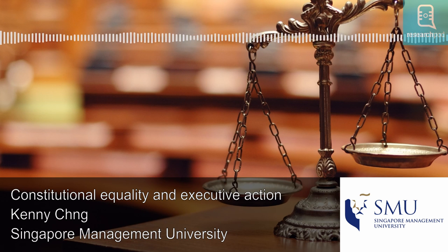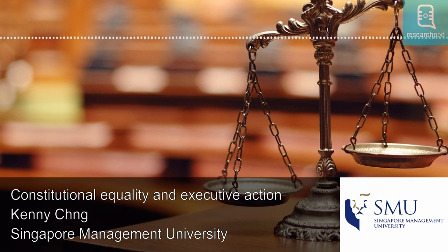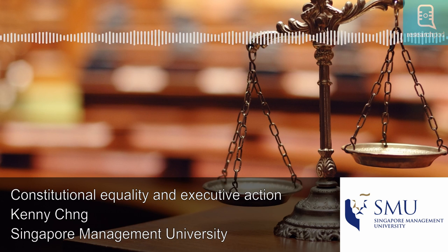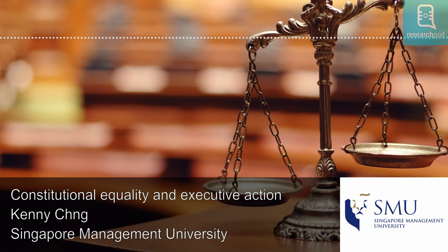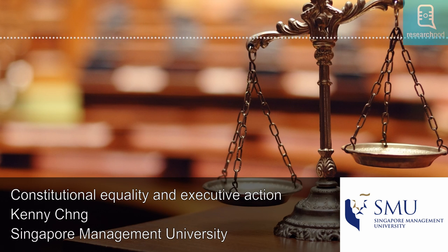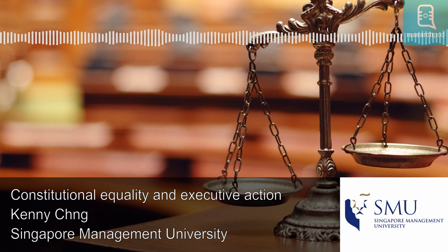For example, a land authority might impose a compulsory acquisition of a person's plot of land for development purposes. In this case, who or what does the adjudicator compare the landowner to when deciding whether or not they have received equal treatment under the law? Chong describes this conundrum as the comparator problem, and it is an important problem. How the comparator is chosen will determine whether there is an equality issue at all, because equality demands that like cases be treated alike. Therefore, if the chosen comparator is sufficiently different from the subject of the government decision, a court cannot declare a violation of equal protection.